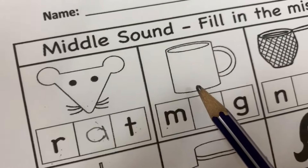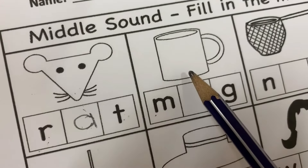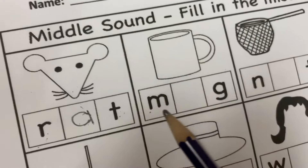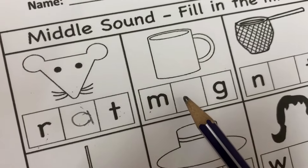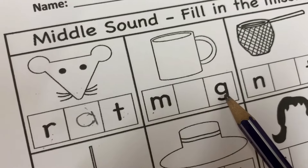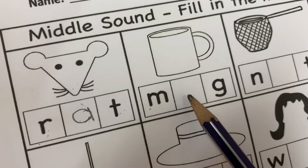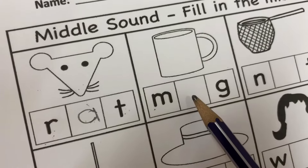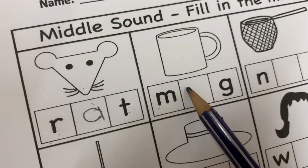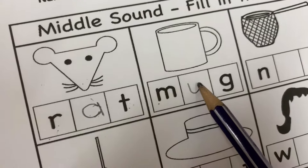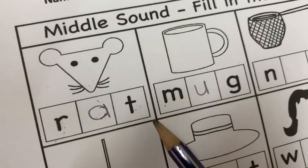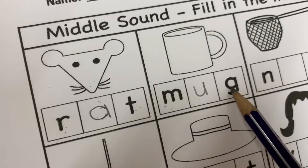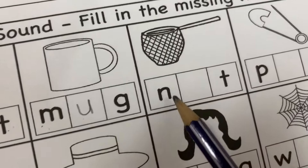Let's look at the picture here. What do we have? A picture of a mug. M... U... G. The missing sound is U. Which letter has the sound U? Letter U. Good job.